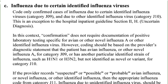If the provider records suspected, possible, or probable avian influenza or novel influenza, the appropriate code is J11 — influenza due to unidentified influenza virus. Whenever you find the words suspected, possible, or probable in coding, it means the doctor is not sure and it is not confirmed, so you do not choose the confirmed diagnosis. Codes from J09 or J10 should not be assigned in suspected/possible/probable scenarios; use J11 instead.